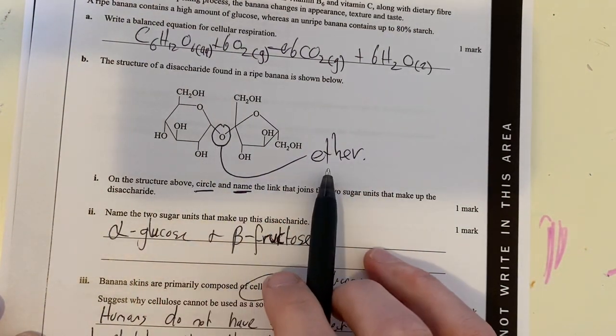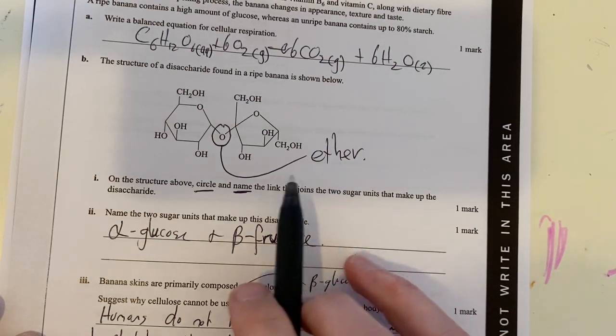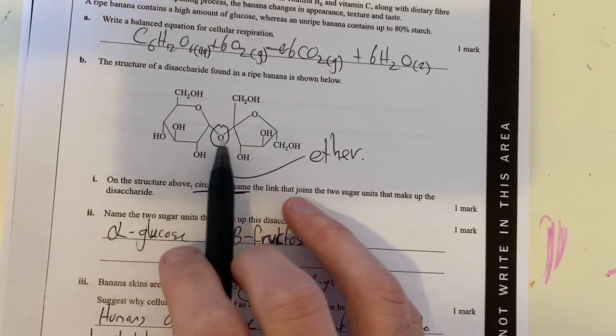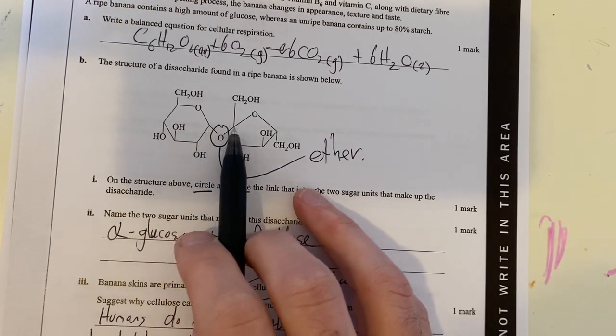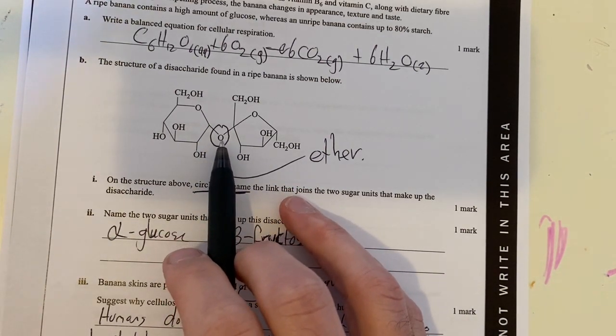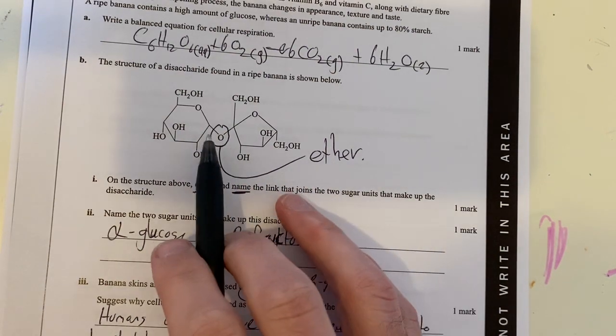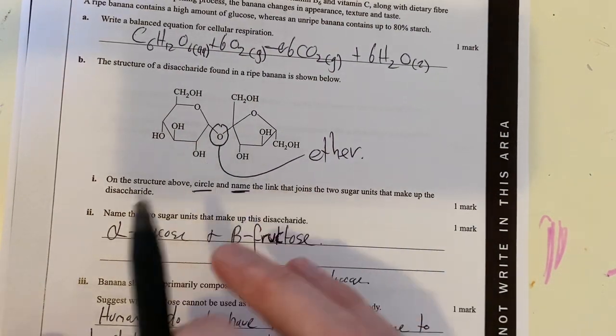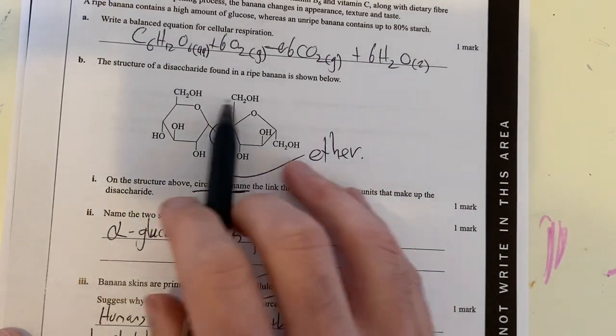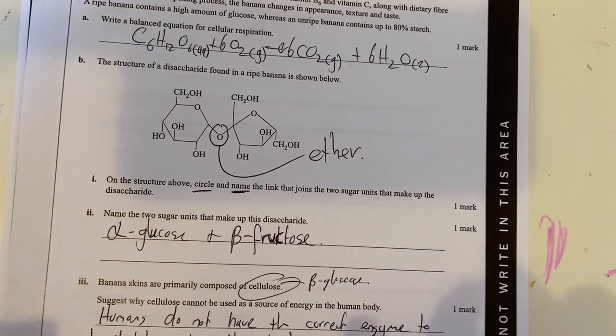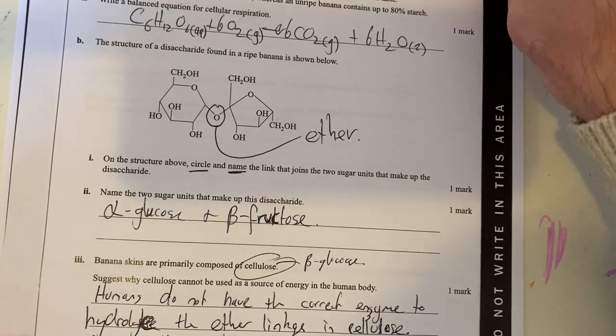You could have named this a glycosidic linkage as well, but ether is what this is, the generic term for it. Glycosidic is the carbon-to-oxygen-to-carbon in only sugars, but ether is the carbon-to-oxygen-carbon in any type of organic compound. So that is your linkage within saccharides or sugars.